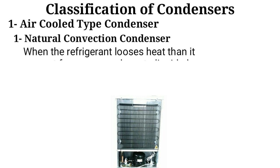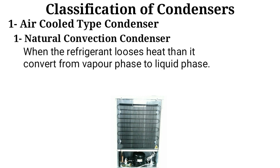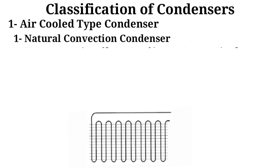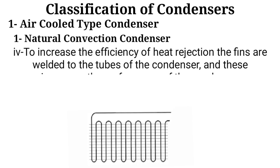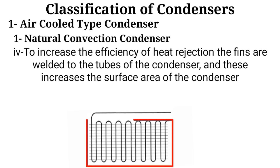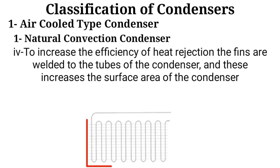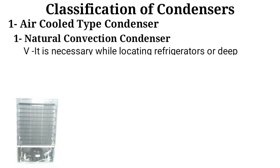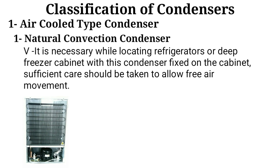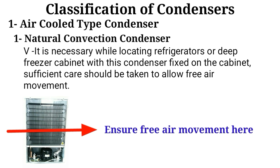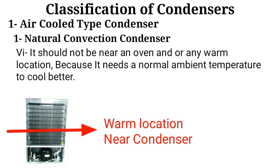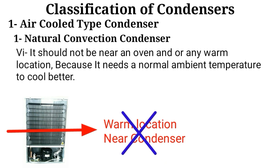When the refrigerant loses its heat, it changes from the hot vapor phase to liquid phase. To increase the efficiency of heat rejection, fins are welded to the tubes of the condenser, increasing the surface area. When locating refrigerators or freezer cabinets with this type of condenser, sufficient care should be taken to allow free air movement. It should not be near any warm location, because it needs normal ambient temperature to cool better.